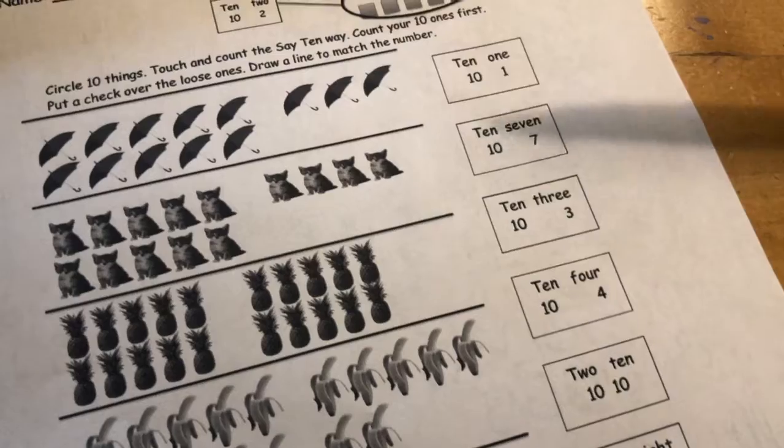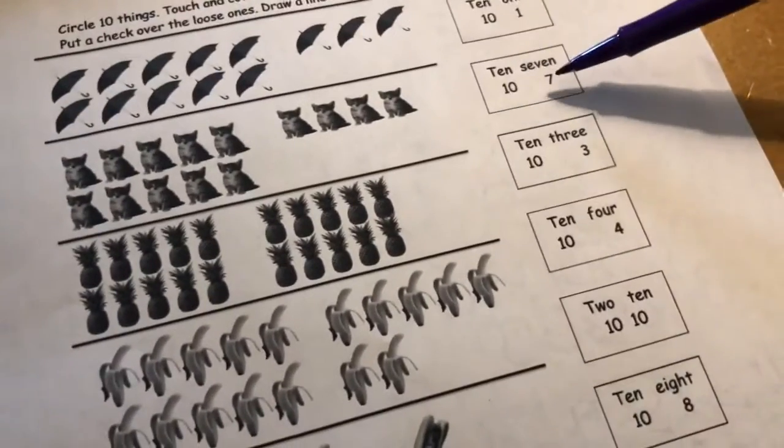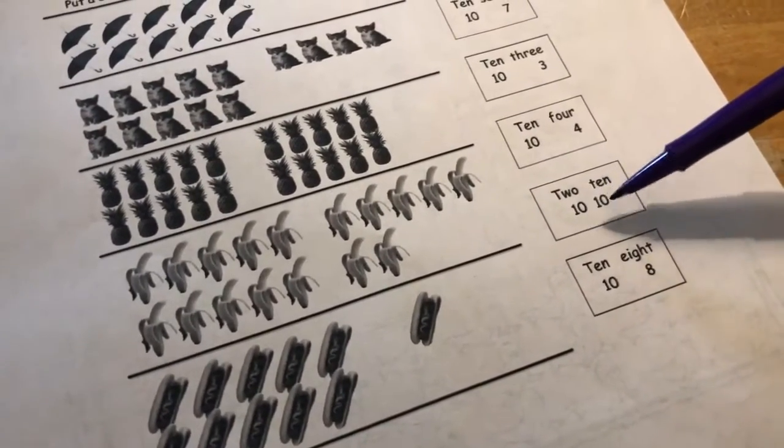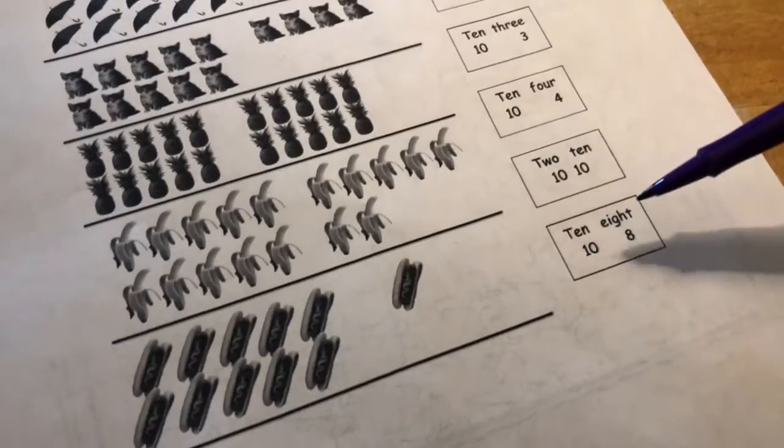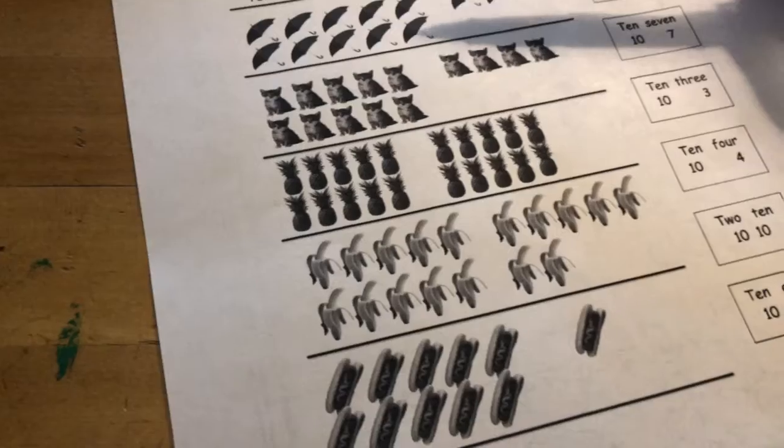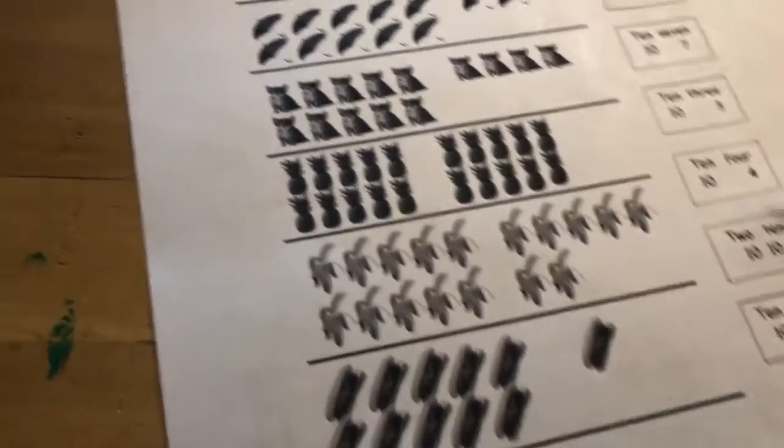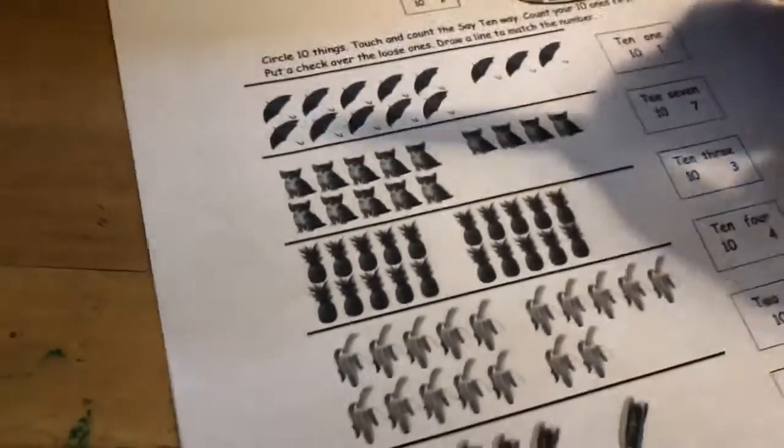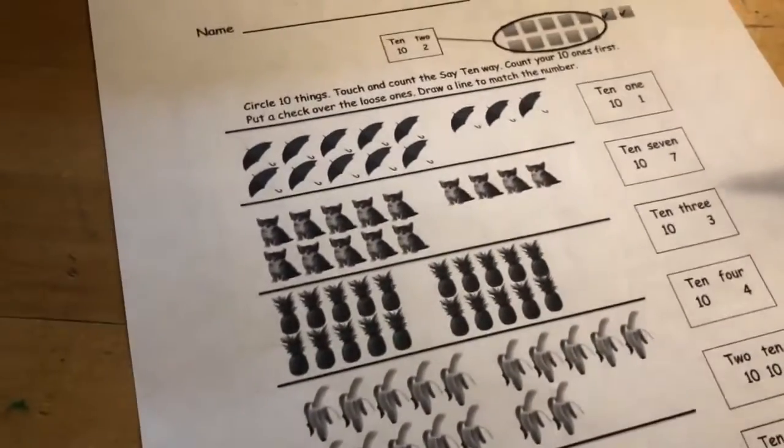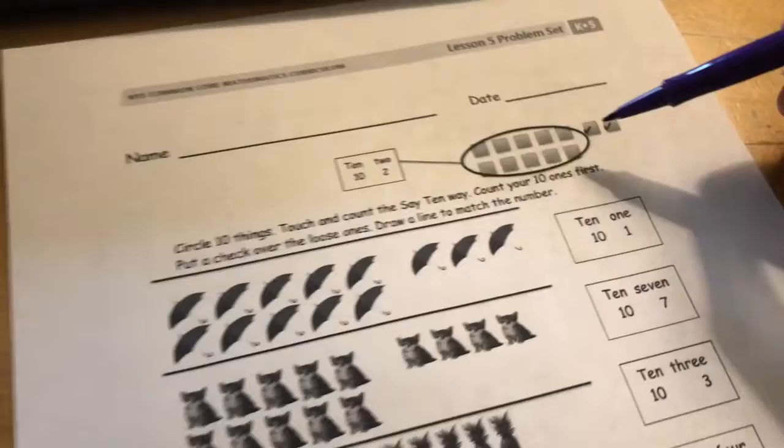So we have 10-1. You'll be thinking in your head, 10-1 is the same as 11. 10-7, 10-3, 10-4, 2-10, right? We see 10-10. That's 2-10, 10-8. And now we're going to look at our group of objects and decide how many objects are there in each group and which of these does it match with, and then you can draw a line to match. And you can be circling 10 things, and we're going to touch and count that say 10 way. So count the 10 1s first, and then we can put a check over the loose ones like we see they did here. They circled that 10-1 and then checked the loose ones.